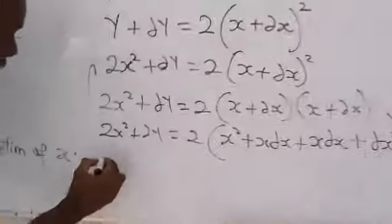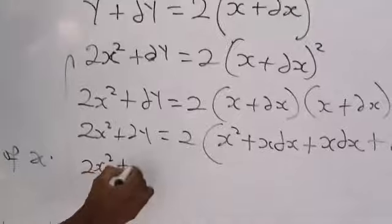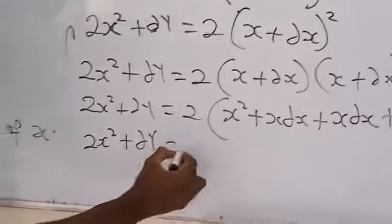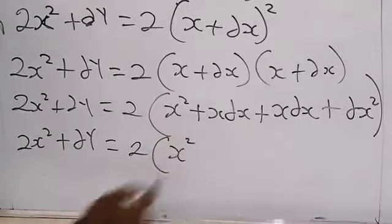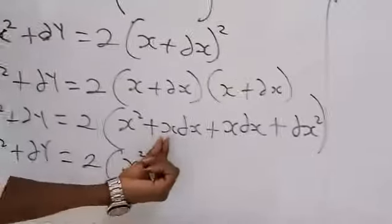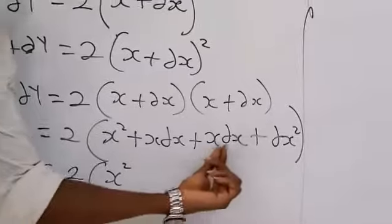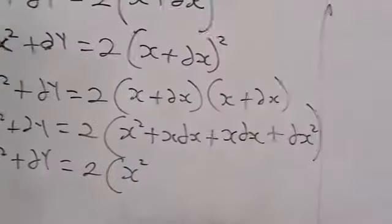If we have that, therefore, that will lead us to your 2X squared plus change in Y equal to 2 open bracket X squared. Now, look at this. You have X change in X and you also have X change in X.